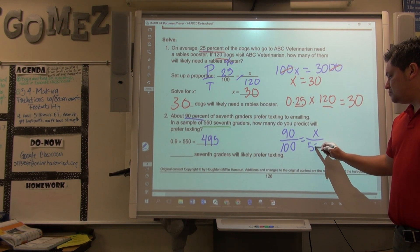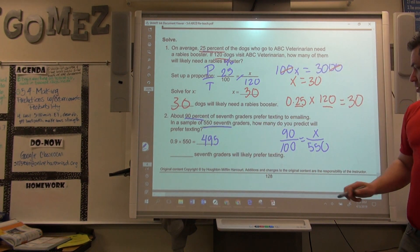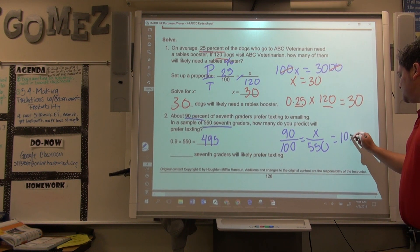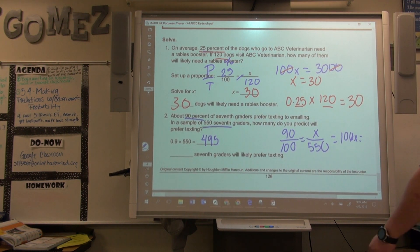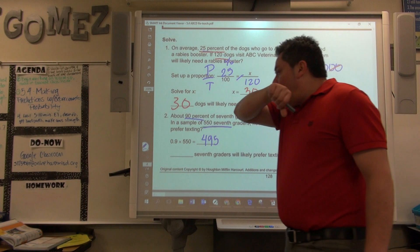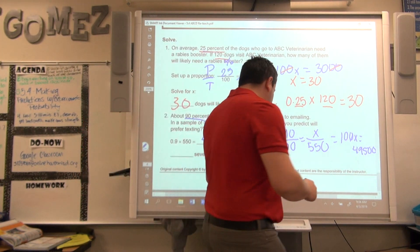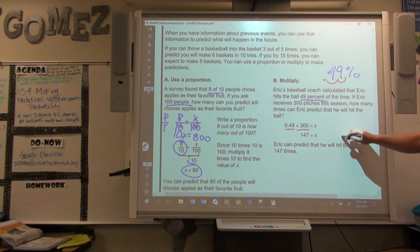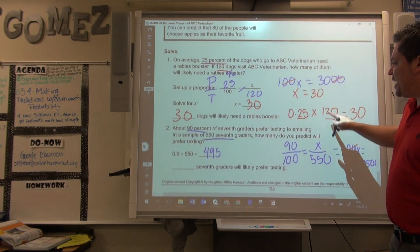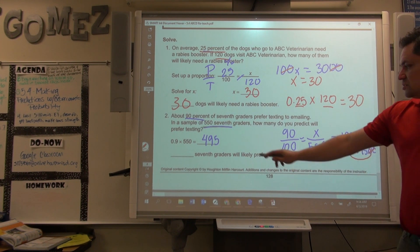X over 550. That's what's given on the scenario, right? You do cross products. So you get 100X equals to 49,500. And you can either divide by 100 in this case, or take out the zeros. Because both of them end in zeros, take them away. Both of them ended with zeros, so you just take them away. And the answer is 495. Same number.